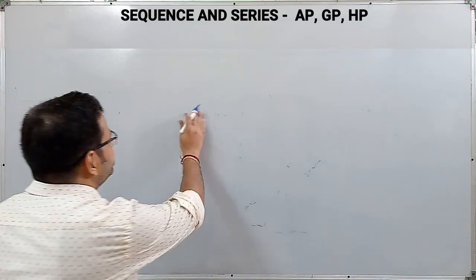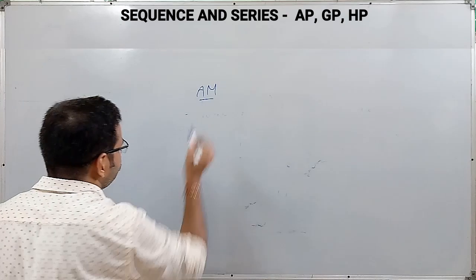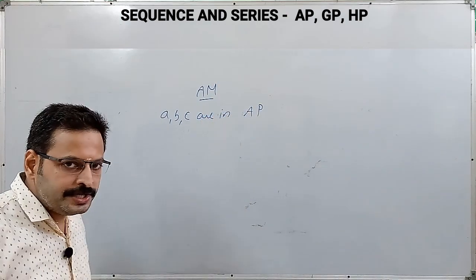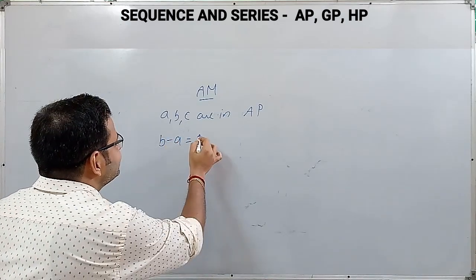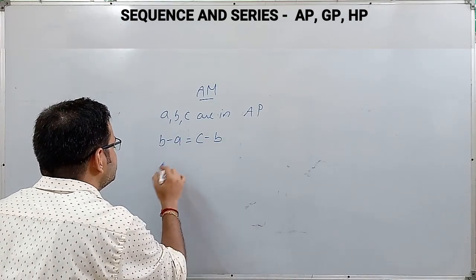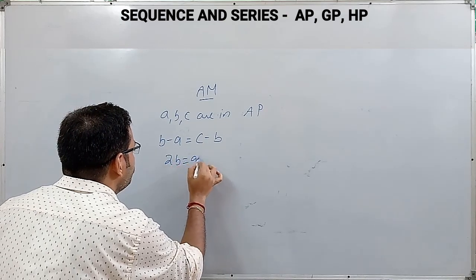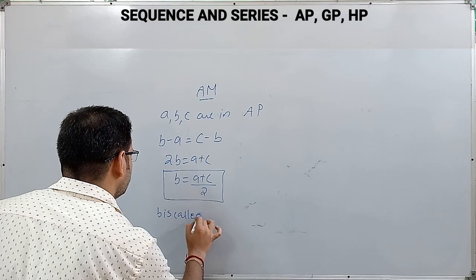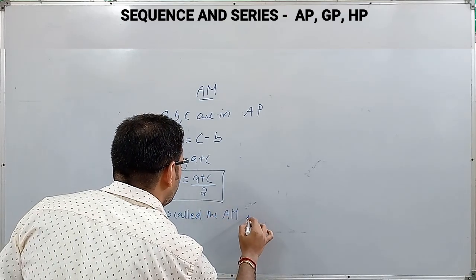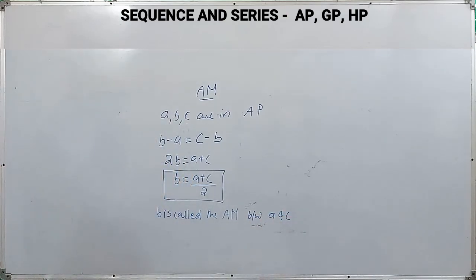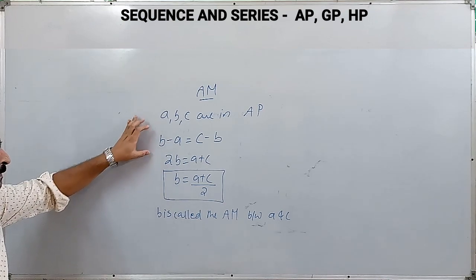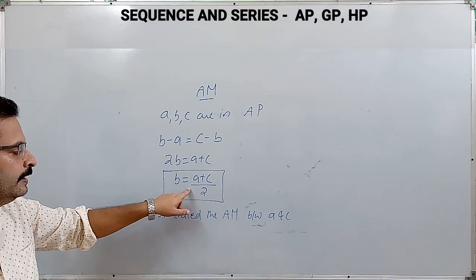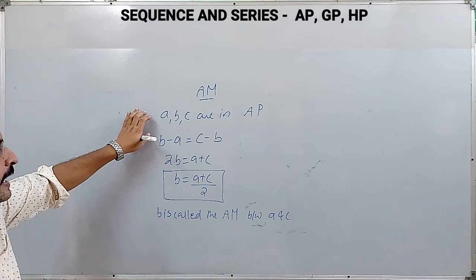Another important area under AP is arithmetic mean (AM). If a, b, c are in AP, then from the definition, b − a = c − b, which gives 2b = a + c, therefore b = (a + c)/2. Here b is called the arithmetic mean between a and c.